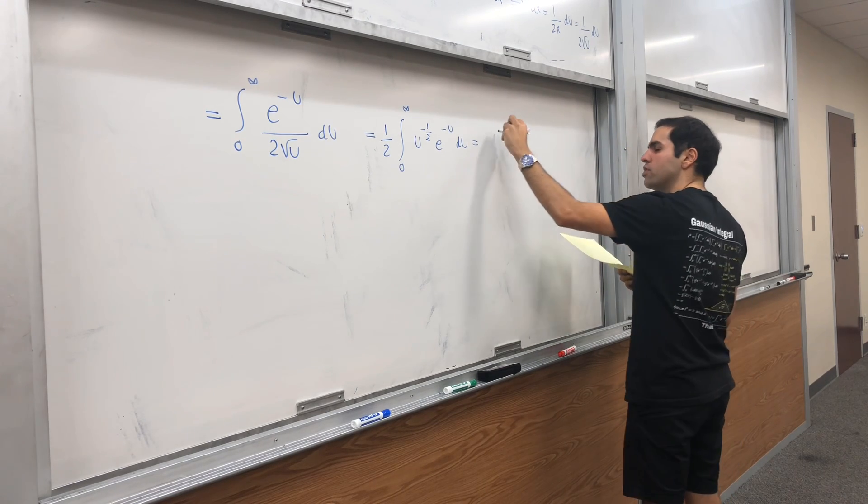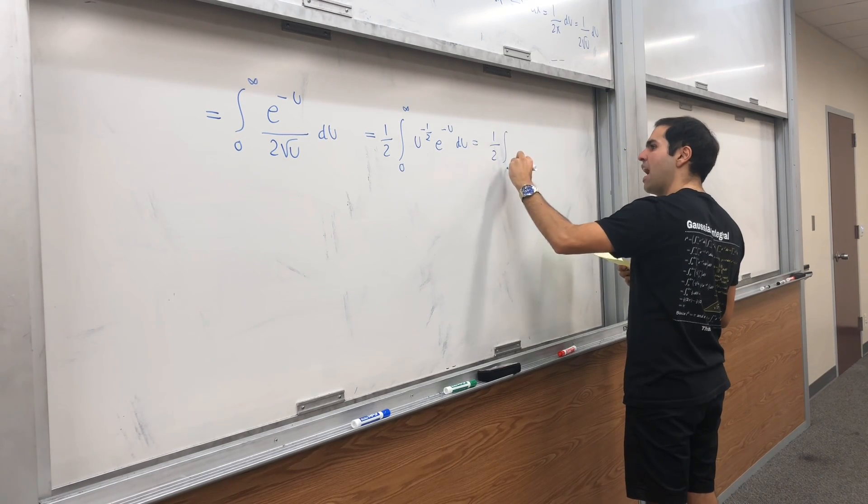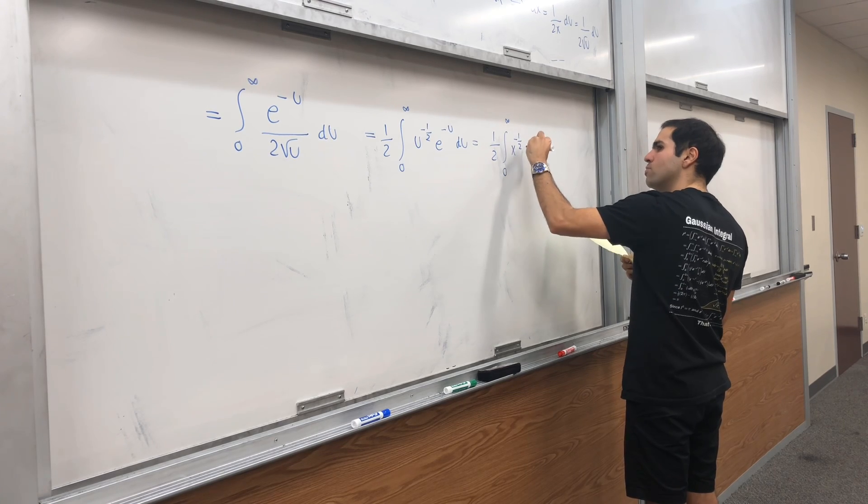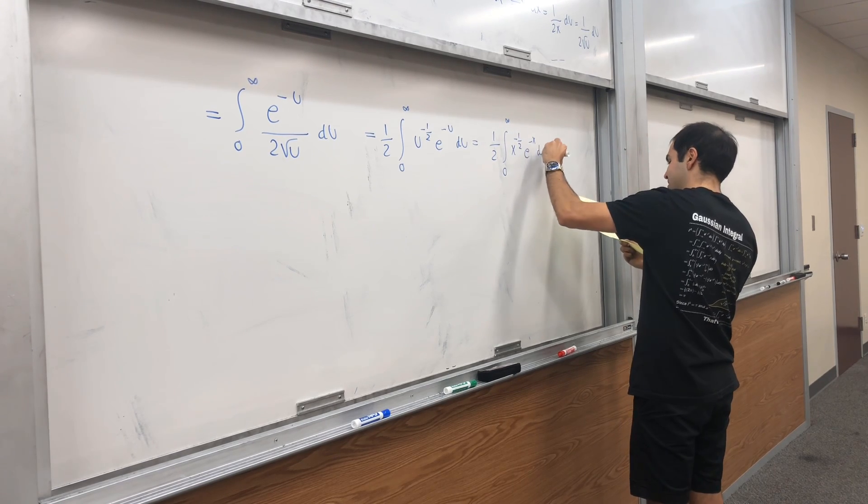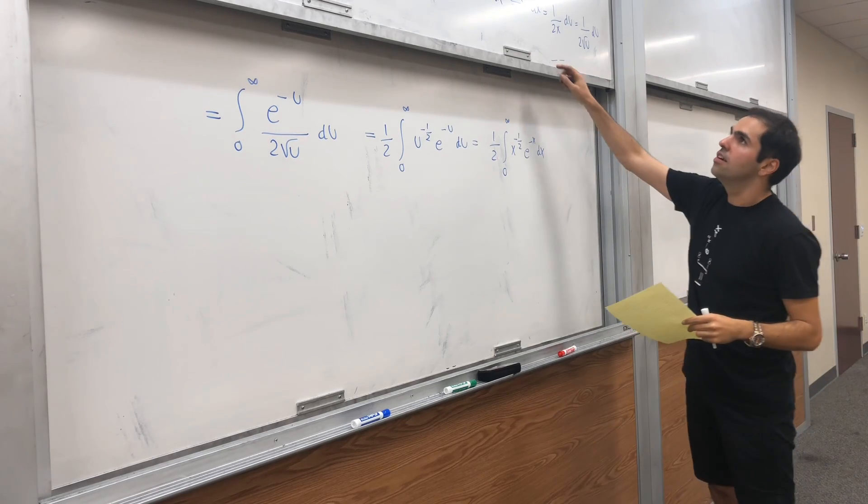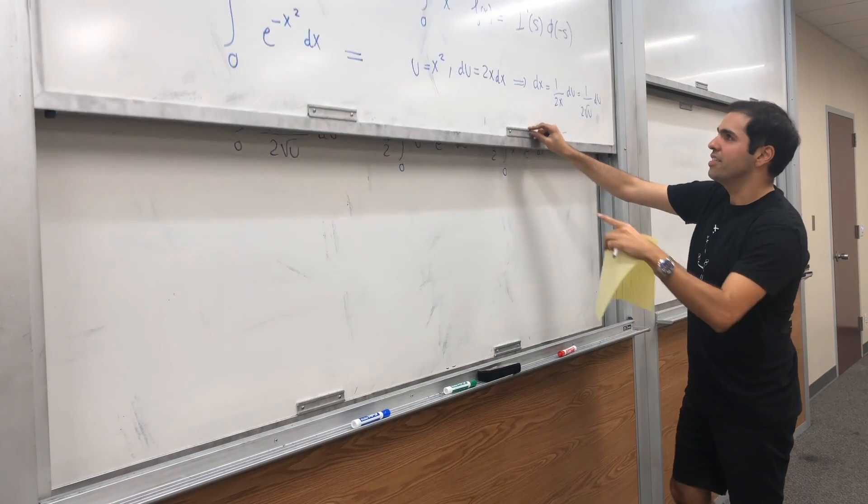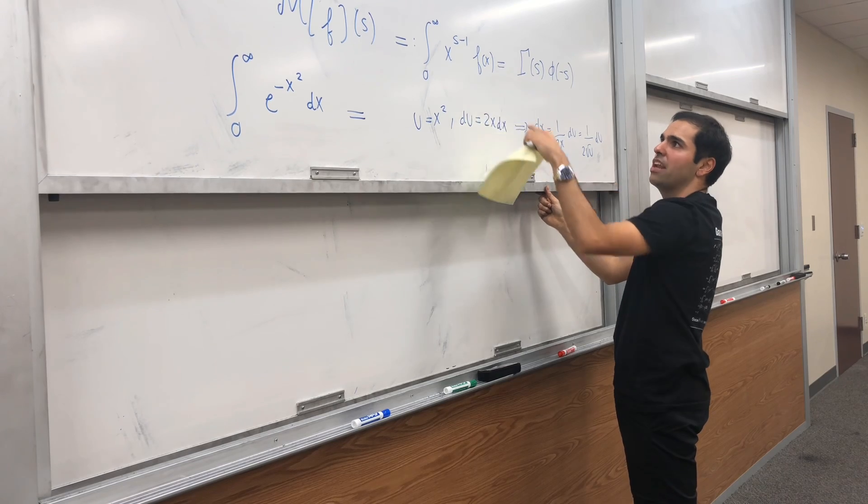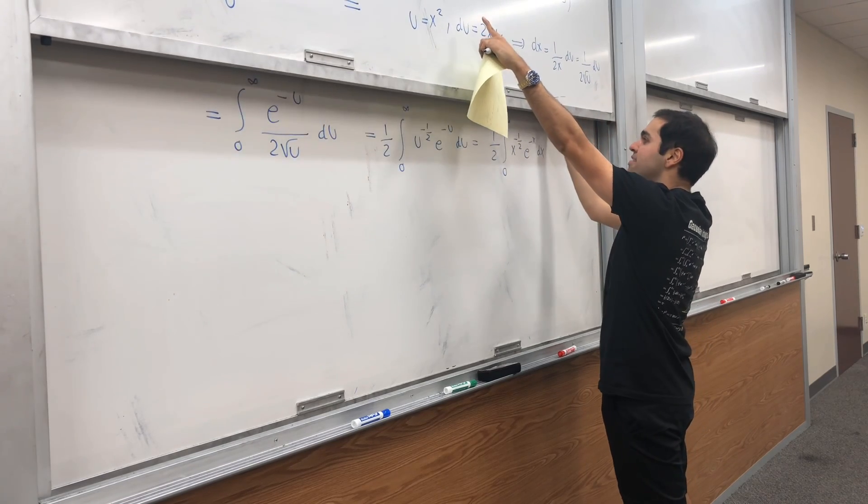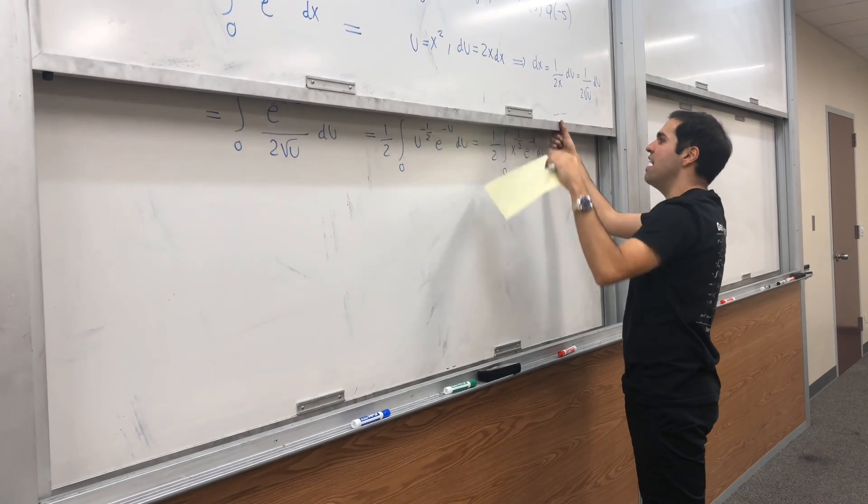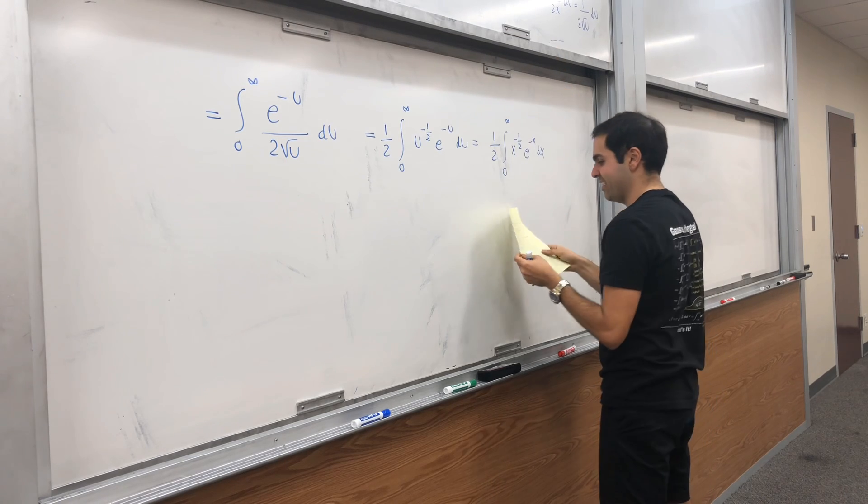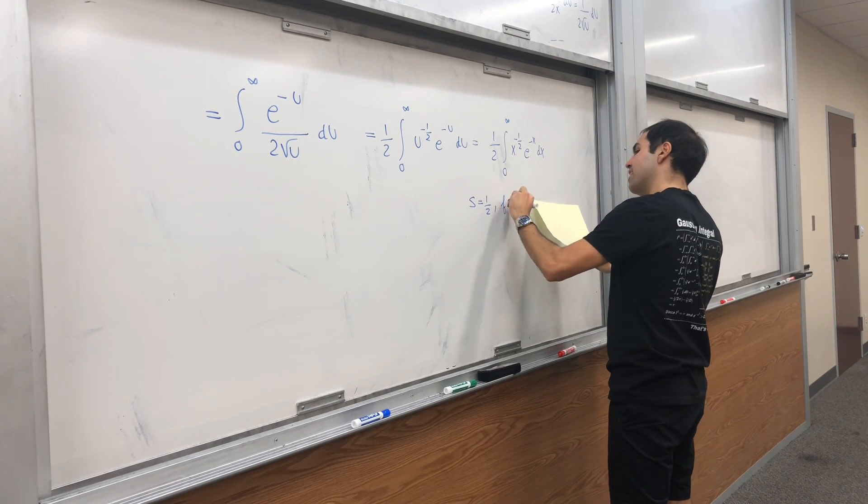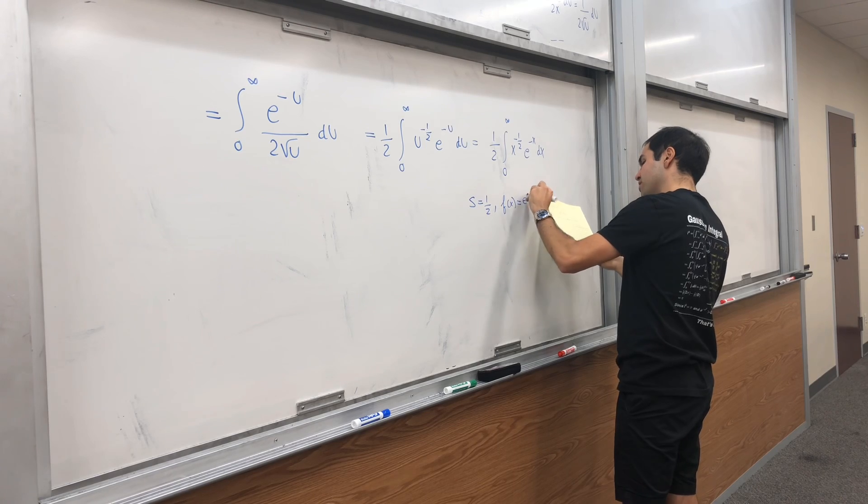Instead of u, let's just write x. One half integral from 0 to infinity x to the minus one half e to the minus x dx. Notice this is precisely of the form x to the s minus 1 times f of x, with s being one half and f being e to the minus x.